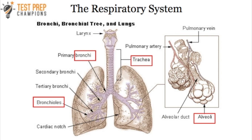The trachea branches into two tubes called the bronchi. There are primary bronchi, secondary bronchi, and tertiary bronchi. The bronchi branch into even smaller tubes called the bronchioles, and at the end of each bronchiole is an alveolus — a single air sac. When talking about multiple air sacs, we say alveoli. You don't have to spend too much time knowing the differences between the types of bronchi; just be aware of them.